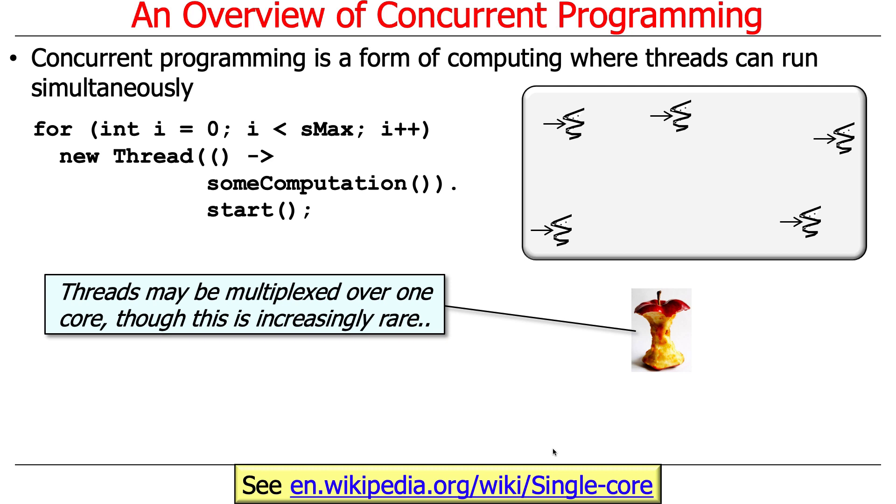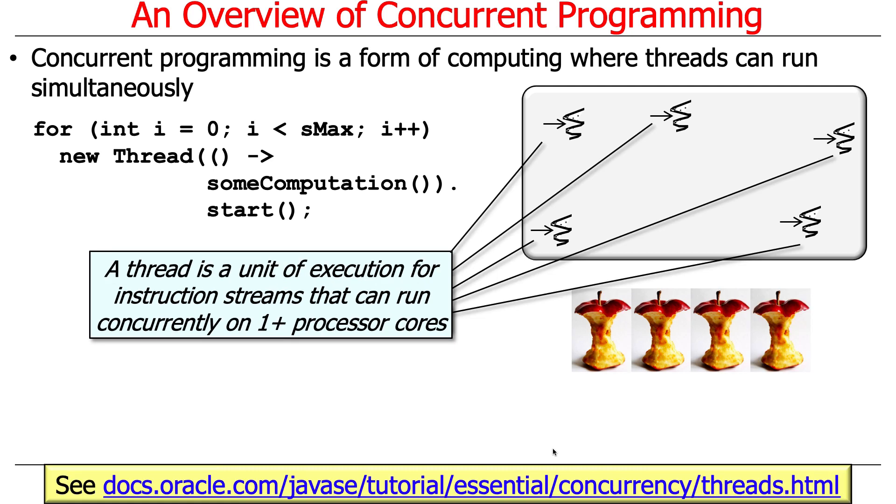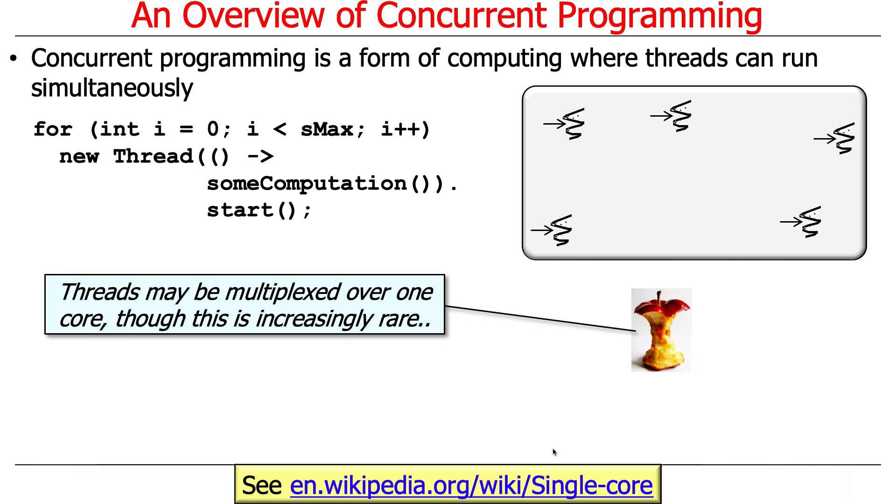Now, it turns out that all of these threads could either run in parallel on multiple cores, or they could be multiplexed over a single core. Although this is getting increasingly rare, because it's getting increasingly hard to buy processors that only have one core.